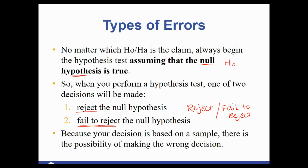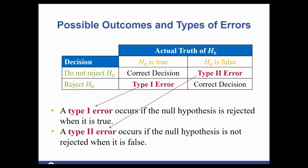Because we're basing this on a sample set of data, there is the possibility of making the wrong decision. There are two possible types of error. Type 1 error occurs when the null hypothesis is rejected when it's actually true. Type 2 error occurs if the null hypothesis is not rejected when it is false.